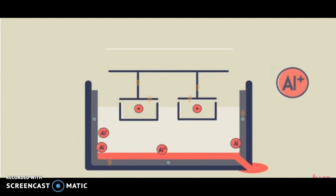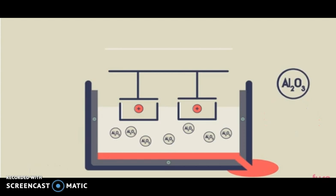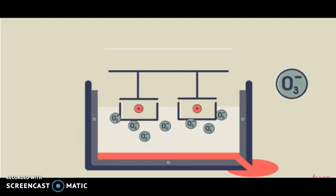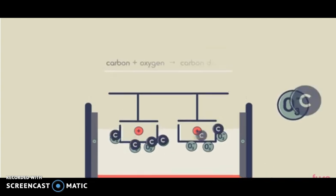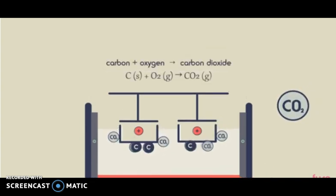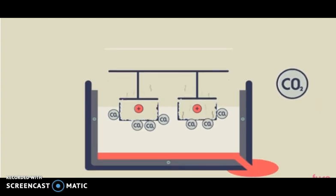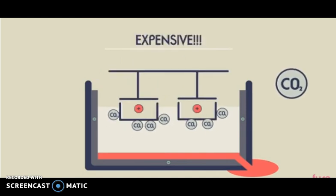The aluminium sinks to the bottom of the tank where it can be tapped off as a pure liquid metal — it sinks because it is denser than the aluminium-cryolite solution. The oxygen from the aluminium oxide forms at the positive anodes. The oxygen reacts with the carbon of the graphite, forming carbon dioxide. The positive anode therefore burns away and needs replacing regularly, which is another reason for the extraction of aluminium being so expensive.